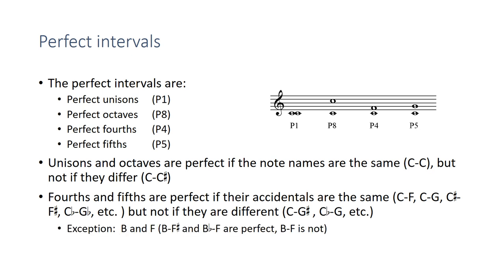Now there's just one exception — I call this the BF exception. If the two letter names are B and F, then you do need to have different accidentals. B to F-sharp is a perfect fifth, and B-flat to F is a perfect fifth. But B to F is not — that's what we call a tritone. So, keeping that exception in mind, fourths and fifths with the same accidental are generally perfect.